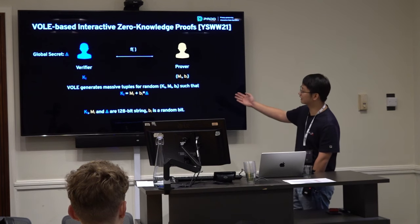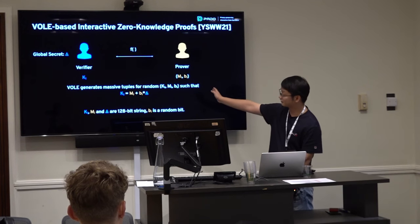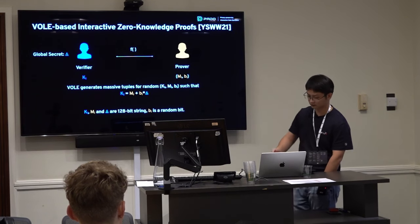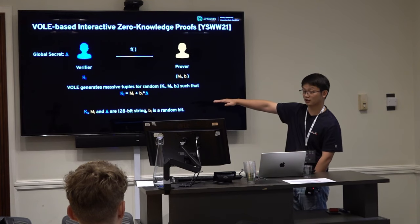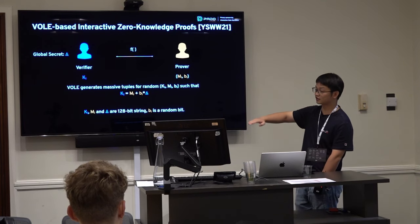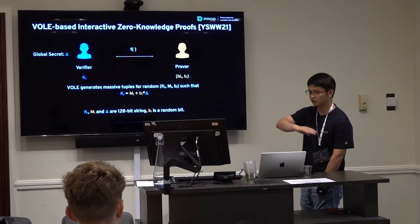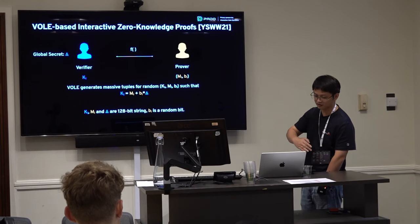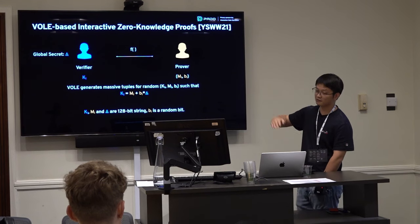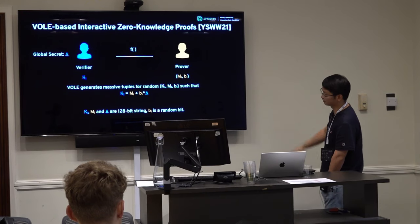Given these VOLE tuples, we can build very efficient interactive zero-knowledge proofs. All operations are very cheap — just XOR and bit operations, unlike SNARKs which require heavy FFT and MSM computations. You can speed things up with AES-NI or SSE instructions. The key trick: given K_i, M_i, B_i for random bits and a witness W decomposed into bits, the prover sends the difference (W_i XOR B_i) to the verifier, who can then verify a MAC on the witness.